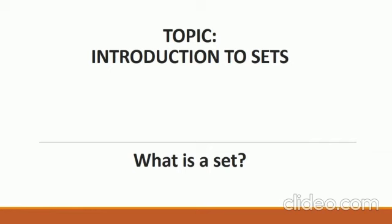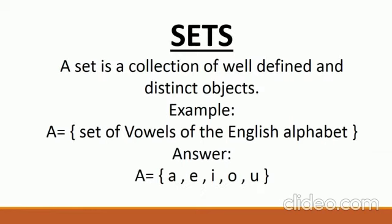First I am going to define what is a set. A set is a collection of well-defined and distinct objects. For example, the set of vowels of the English alphabet — as you all know the vowels of the English alphabet are A, E, I, O, U. So a set is a well-defined collection of objects.